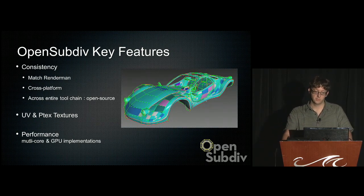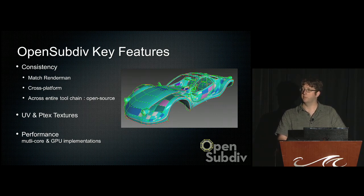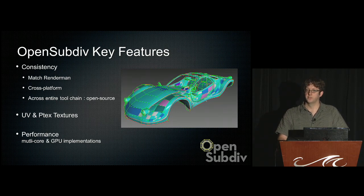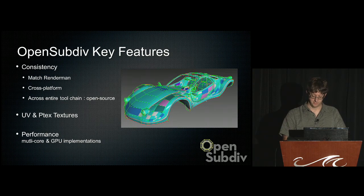A key feature of OpenSubdiv is consistency across the entire tool chain. OpenSubdiv exactly matches RenderMan by sharing a library with it. In our Presto animation system, we can see the exact same surface as in RenderMan. We'd like to promote this so the same surface appears in third-party packages, so you can trust the image all the way down your tool chain. We also have UV and PTEX texturing supported, and this is a very high-performance library.